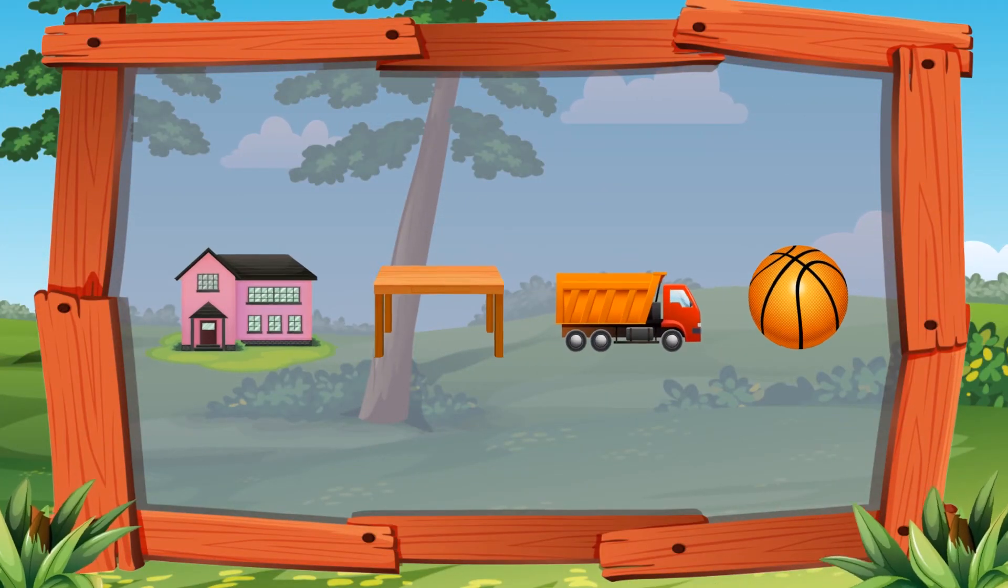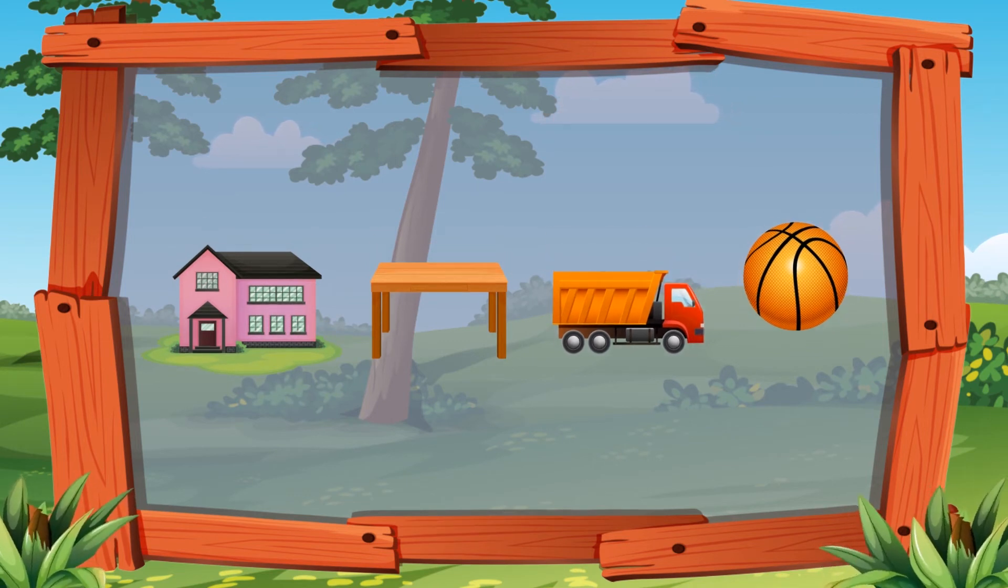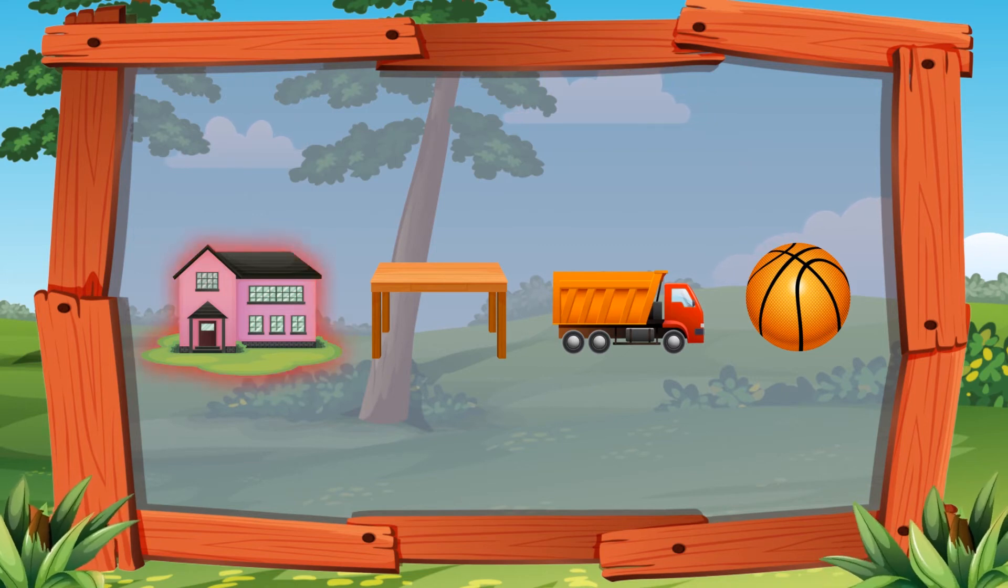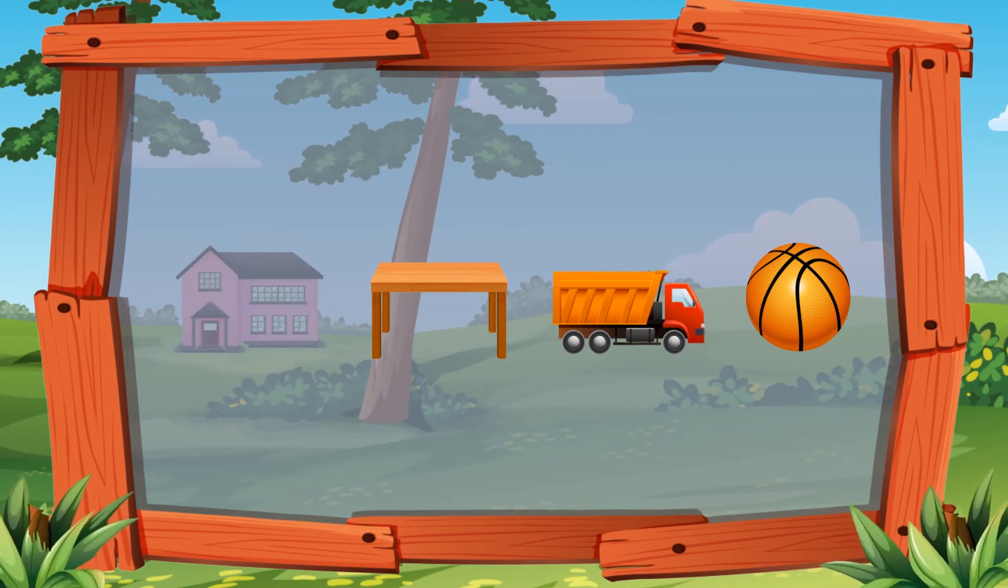And now, let's see how well you remember the lesson. Kids, do you remember which objects are light? Is this object light? No, it's a house. Of course it isn't light. And what about the table?